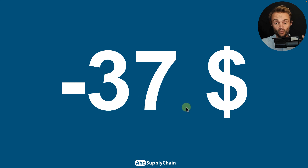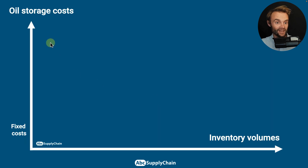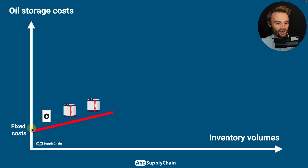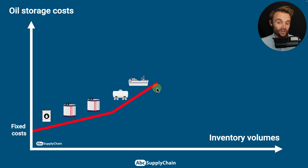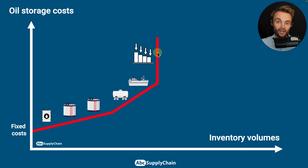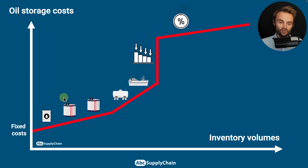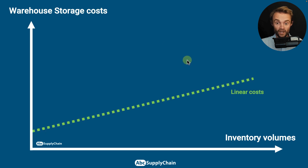The price went negative because there wasn't enough space in the world to store all the oil after the demand crash. It wasn't only speculation — we literally ran out of storage. The cost of storing oil went so high that the effective price of the oil itself became negative, and that's why we had that insane price for a few days and weeks. You can see this is a non-linear curve.